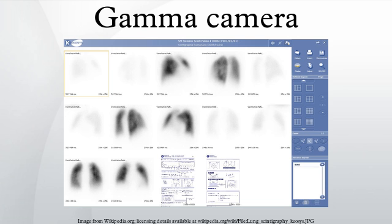Scintigraphy is the use of gamma cameras to capture emitted radiation from internal radioisotopes to create two-dimensional images.